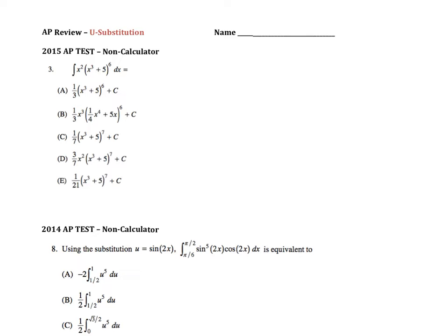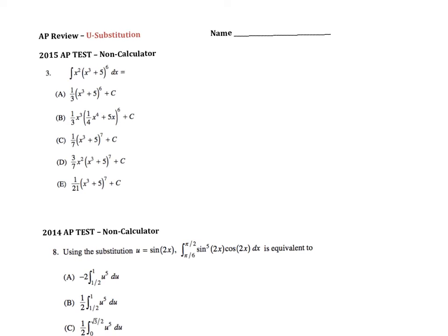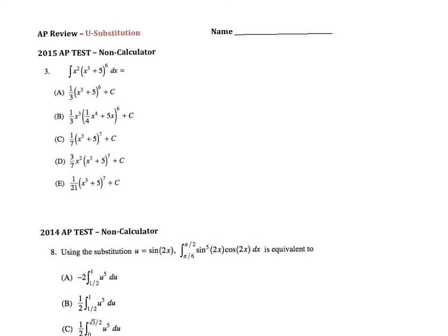For u-substitution, we use this when we're expected to take an antiderivative and our basic rules can't apply because the function is too complicated. On this first function, I'm going to make my u equal to x cubed plus 5, and the derivative of u with respect to x would be 3x squared.